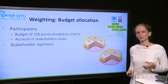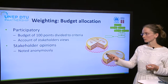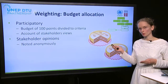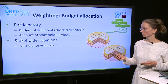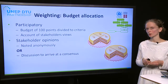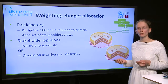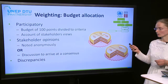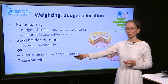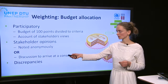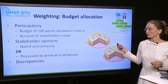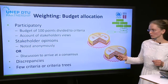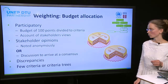The way stakeholder opinions can be gathered is either anonymously using surveys or questionnaires, and then the consultant or TNA coordinator can average them out. Another option is to organize a stakeholder discussion where the aim would be to arrive at a consensus on how this cake should be shared. It is important, no matter which option is chosen, that discrepancies are noted, as this will also be used in the sensitivity analysis. The fewer the criteria, the easier it is to assign weights, but criteria trees can also help.